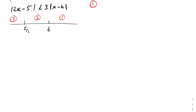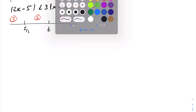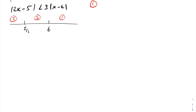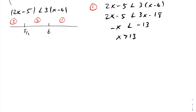Examining interval one: when x is greater than six, both the left-hand and right-hand side absolute values will be positive. Therefore we can drop the absolute value signs and solve the inequality directly.